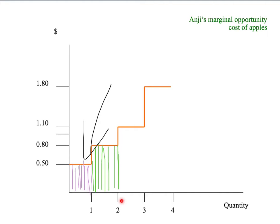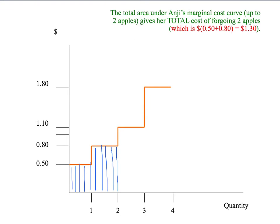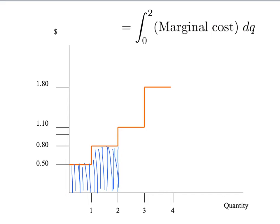That's equal to $0.50 plus $0.80, or $1.30. So Anji's total opportunity cost of forgoing two apples is given by the total area under Anji's marginal cost curve up to two apples — that's the blue shaded area. Mathematically, we can write that as the integral under Anji's marginal cost curve between zero apples and two apples. So the integral under her marginal cost curve with respect to Q between zero and two apples equals this blue shaded area — that's just the mathematical way of writing it.